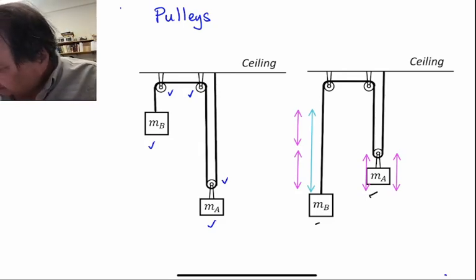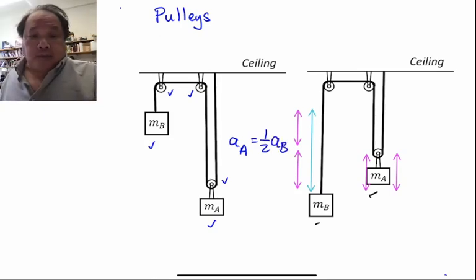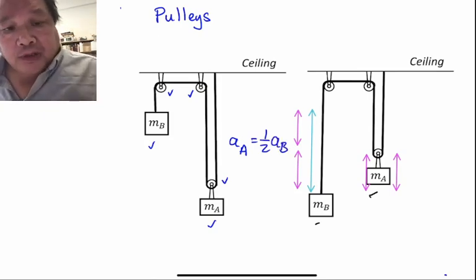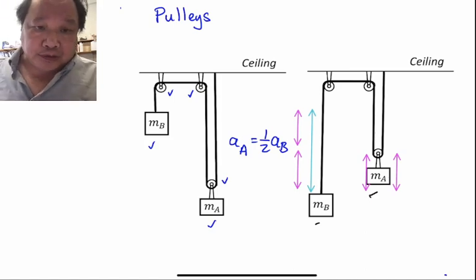The acceleration of the A block is one half that of the B block because when the A block moves, both magenta ropes on both sides have to equal the single amount of rope on the B side.